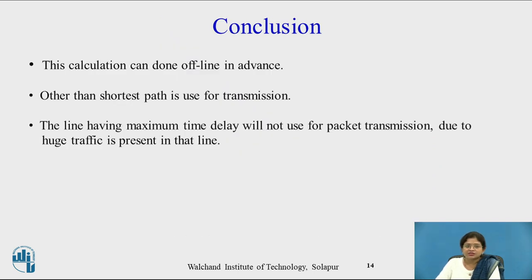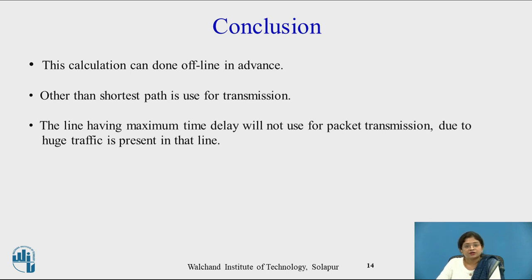The conclusion is that this calculation can be done offline in advance. Other than the shortest path is used for transmission, and finally the line having the maximum time delay will not be used for packet transmission due to the huge traffic present on that line — so that line is not chosen by the source router. This is the flow-based routing algorithm. In this video we have seen the flow-based routing algorithm as well as the comparison between flow-based and shortest path routing algorithms.